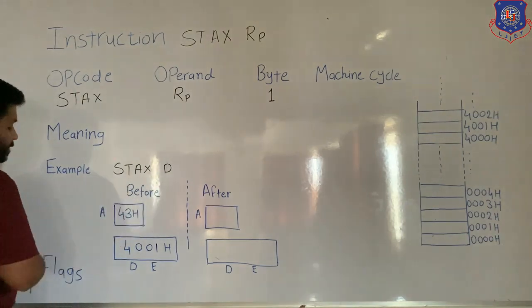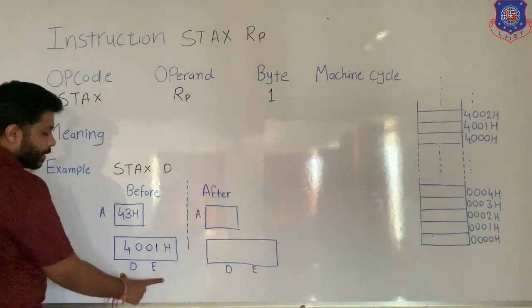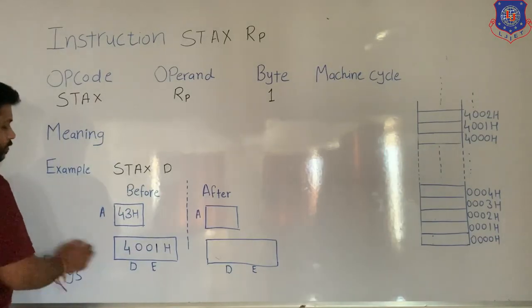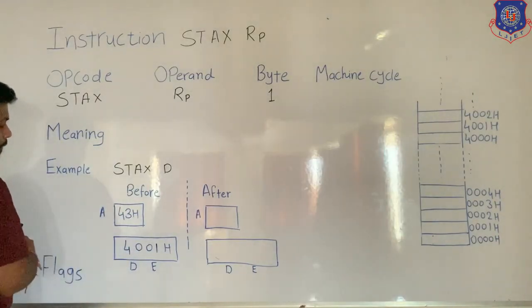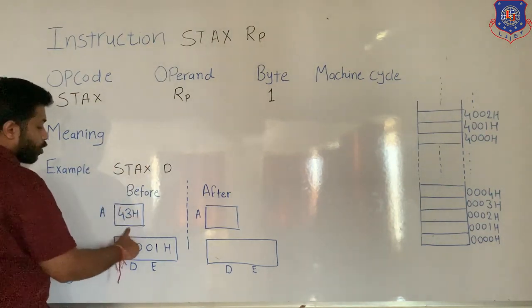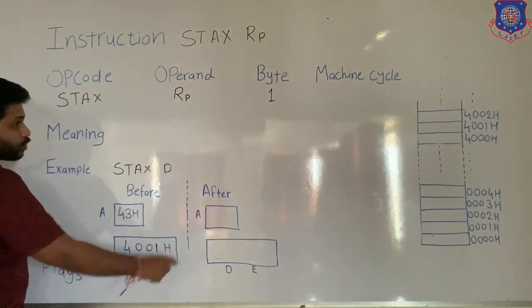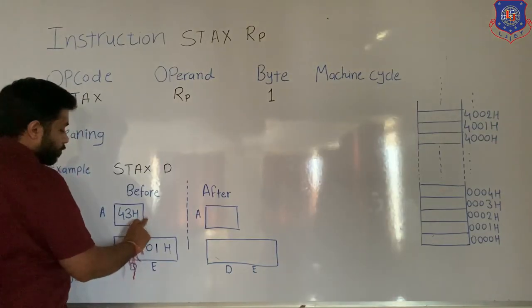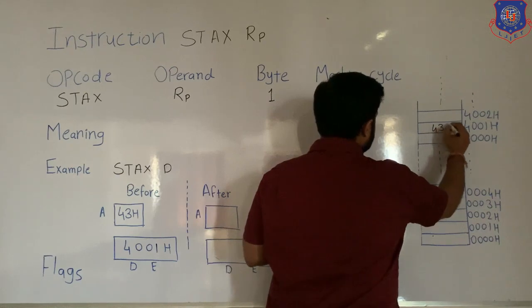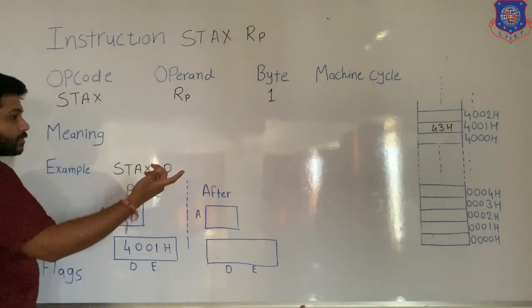Right now we are taking the example STAX D. Before execution, the accumulator contains 43H and the DE pair contains 4001H. After execution, the data from the accumulator will be transferred to memory — specifically to the memory location specified in DE pair. Since DE pair holds 4001H, the data 43H from the accumulator will be transferred to memory location 4001H. So you can see that 43H is stored at 4001H.